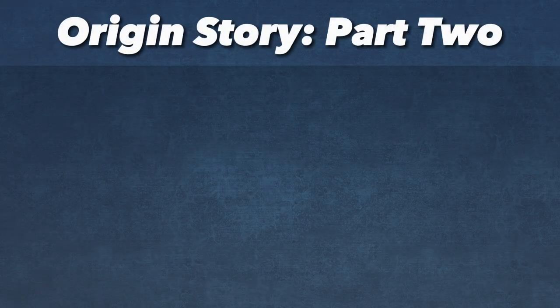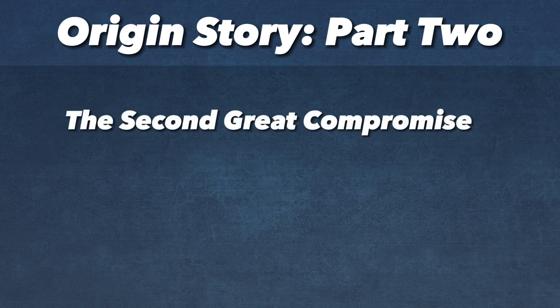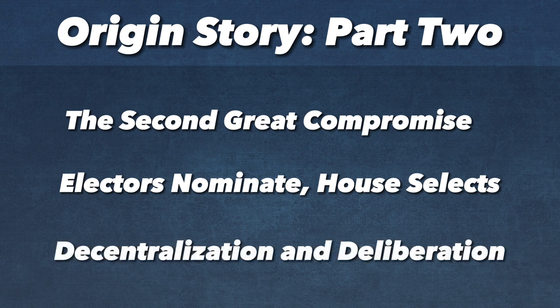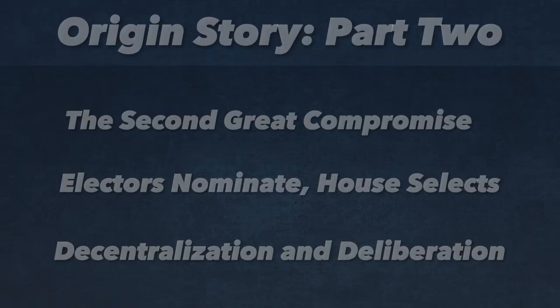The origin story of the electoral college will continue in part two, where we will delve deeper into the second great compromise, the evidence to support the framers' design of electors nominating and the House selecting the president, and the overall theory of the framers' preference for building an electoral system based in decentralization and deliberation.